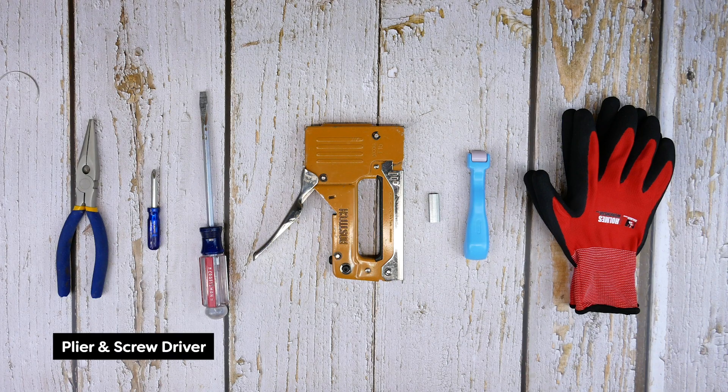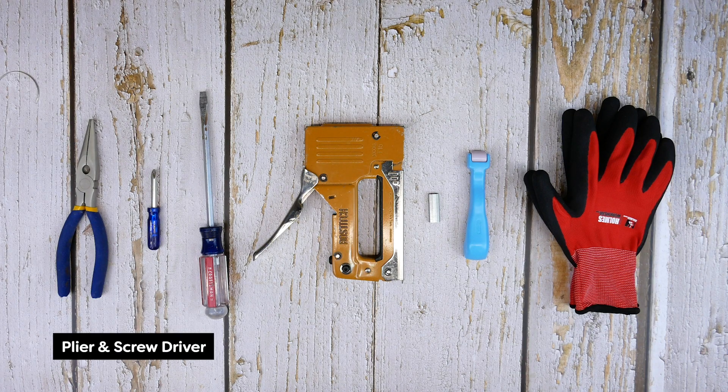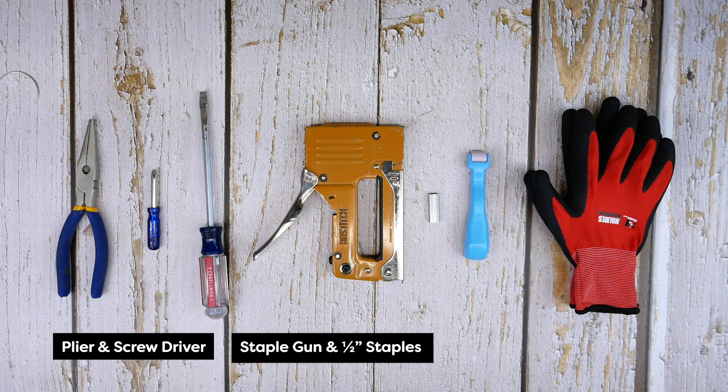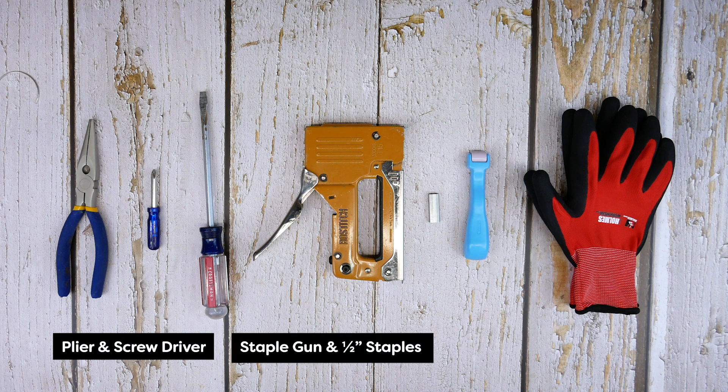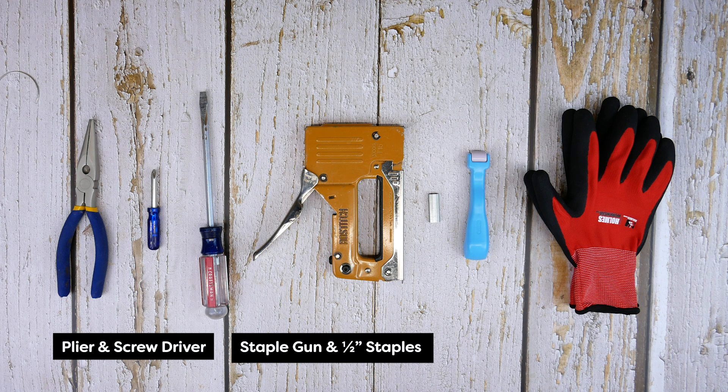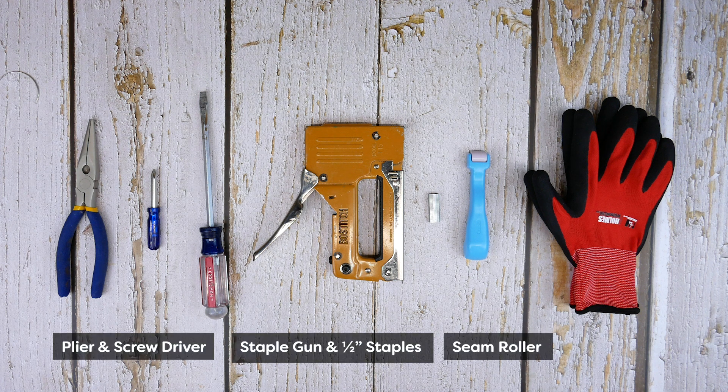You will need some pliers and a screwdriver to remove the old cover, and a staple gun with half inch staples to reattach the cover. It is also useful to have a seam roller when you are working with vinyl.